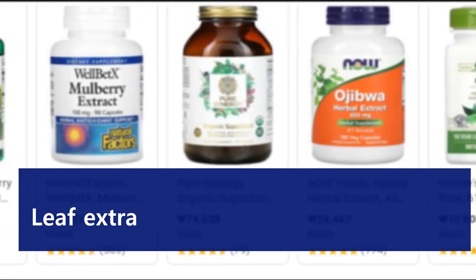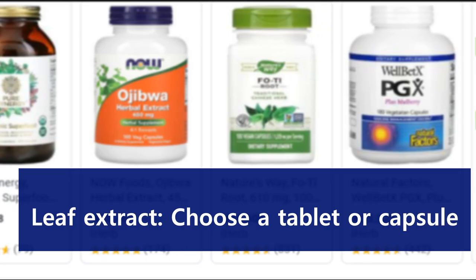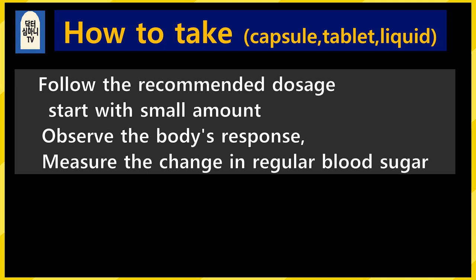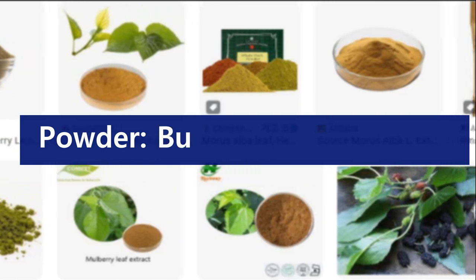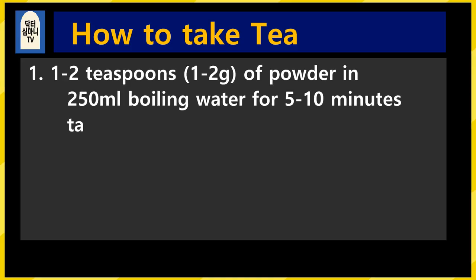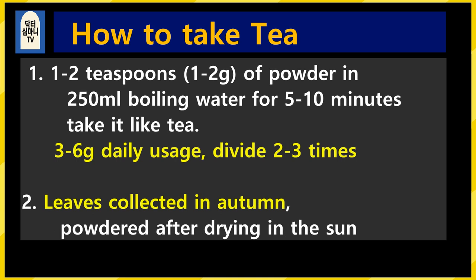If you search the internet, you will find many products. Choose a product made from mulberry leaf extract. Start as recommended with a small amount and increase slowly while observing your reaction. If you want to take tea, buy a powder product or make leaf powder at home. In 250cc of boiling water, add 1 to 2 teaspoons of powder, wait 5 to 10 minutes, and drink after meals like tea — 2 to 3 times a day. The usual daily dose is 3 to 6 grams, taken in divided doses. When making powder at home, mulberry leaves should be collected in autumn, dried in the sun. You should take it for more than 1 month.